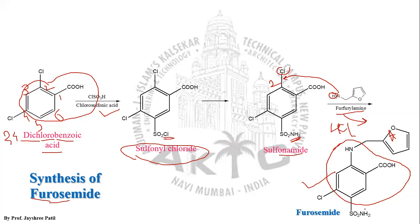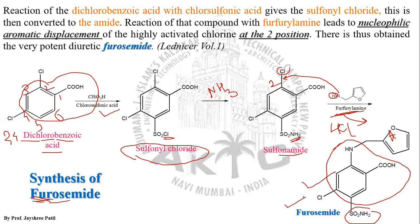In summary, furosemide is synthesized starting from 2,4-dichlorobenzoic acid. Treatment with chlorosulfonic acid produces sulfonyl chloride; treatment with ammonia converts that to a sulfonamide. Then a nucleophilic displacement reaction with furfurylamine introduces the furan ring, ultimately giving the target compound furosemide.